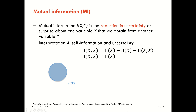We can think about self-information: how much information do we get about the variable x from the variable x itself? If we plug this into the mathematics for mutual information, we get the sum of two entropies minus the joint entropy of x and x, which is simply the entropy of x. So that term cancels with one of these and we're left with the entropy of x. We see then that the information x provides about itself is equal to the total uncertainty in x.